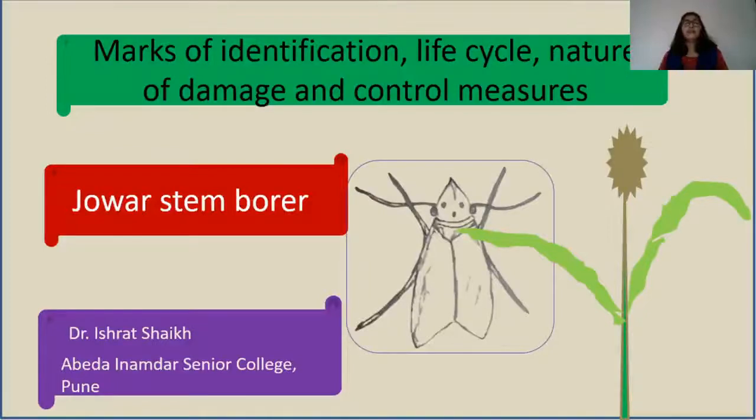Hello everyone. Today we will be starting with a new module on agricultural pests. Our discussion today covers marks of identification, life cycle, nature of damage, and control measures of Jawar stem borer.